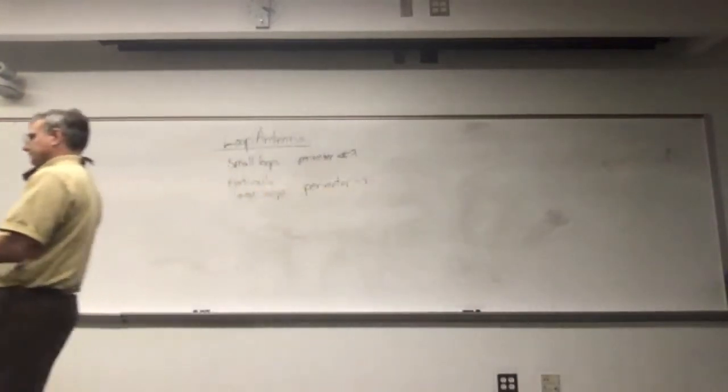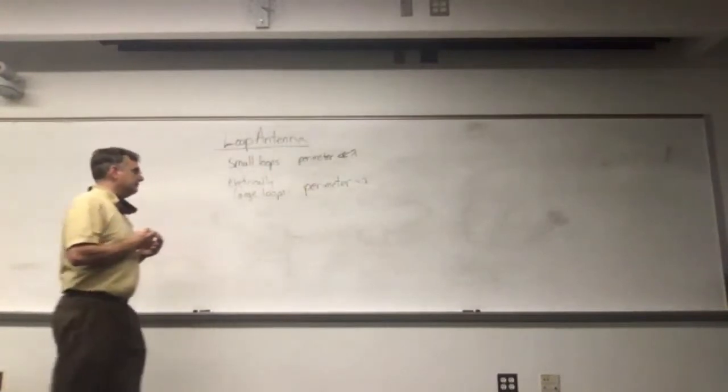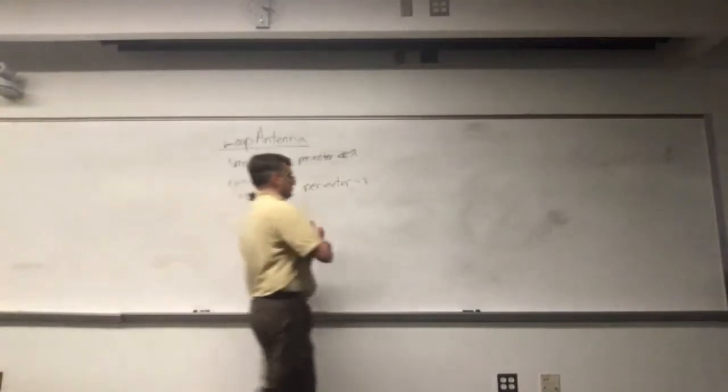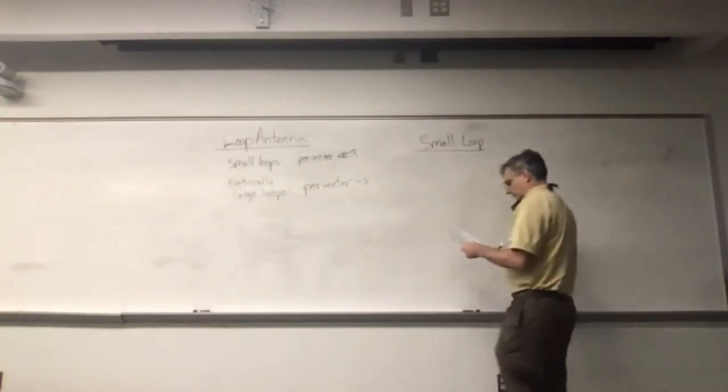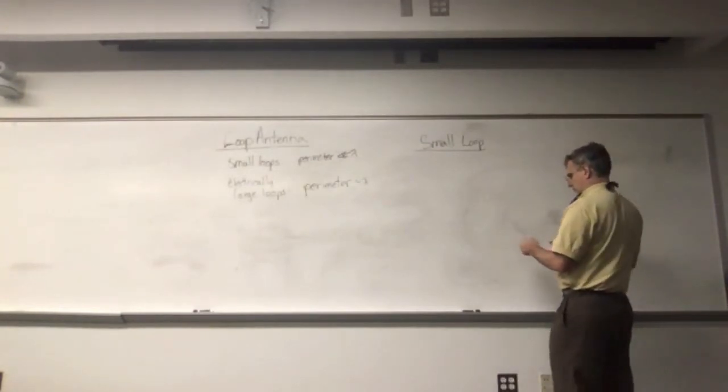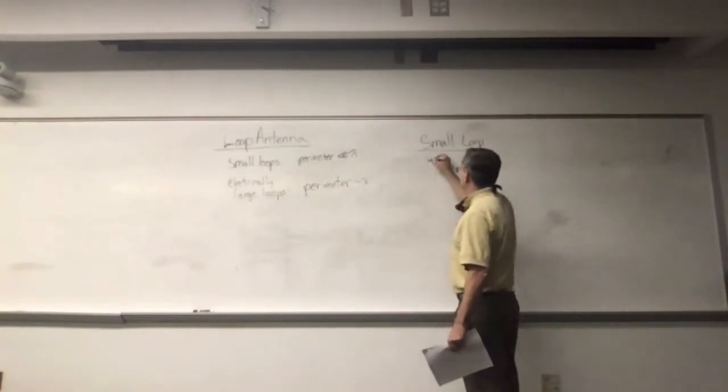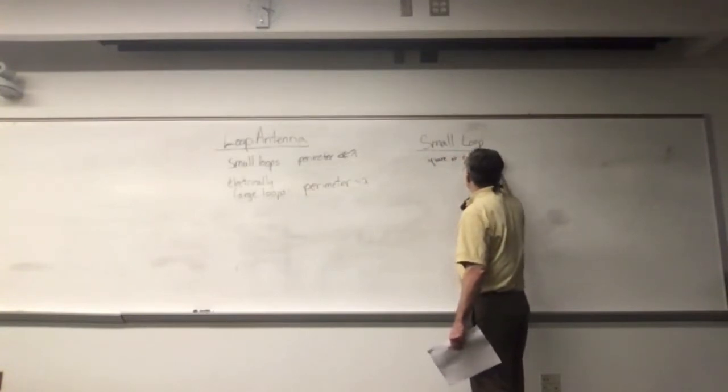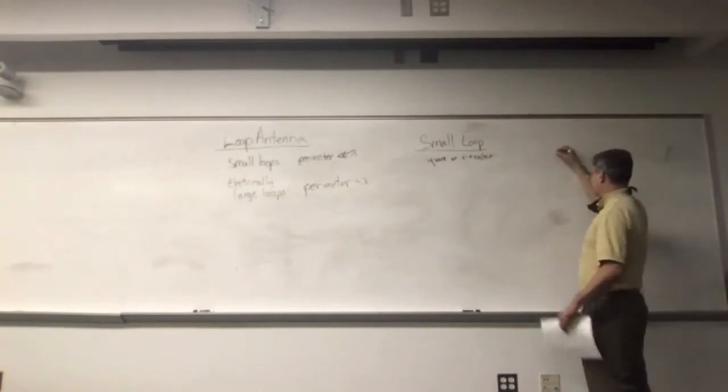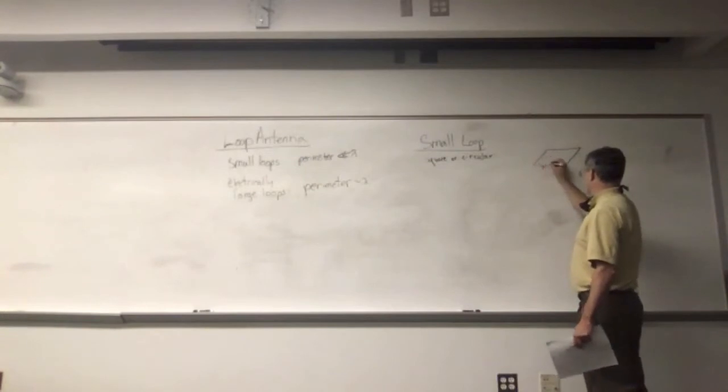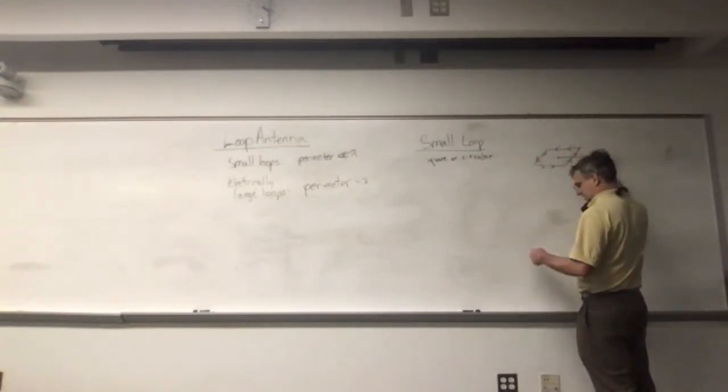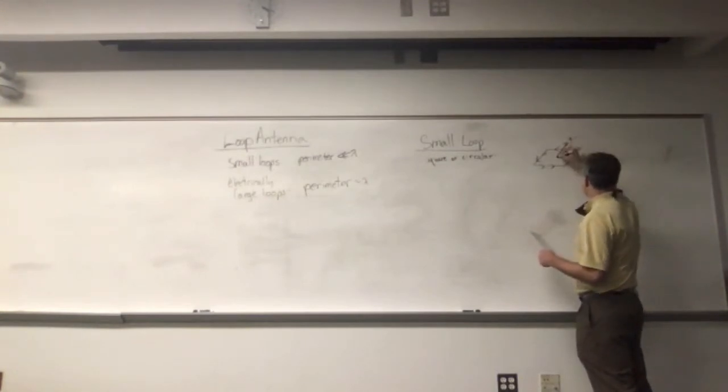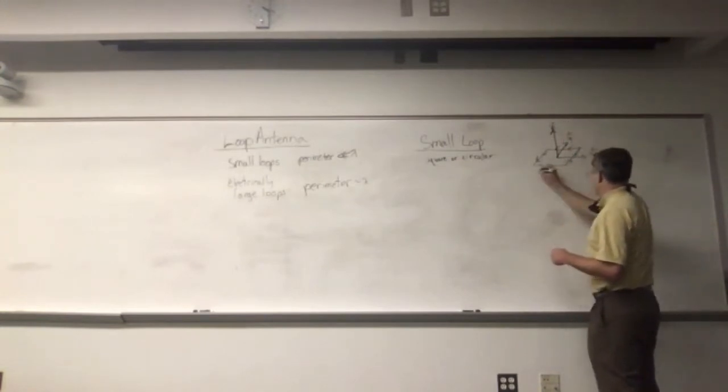So let's just start with the electrically small loops. In this problem, let's talk about the small loop current distribution. I have a small loop, I'm going to draw it. This could be either square or circular. I'm going to draw it like a square first because we're eventually going to enlarge this diagram so that it becomes a perimeter of wavelength. The side lengths here are in the x direction, side length L.